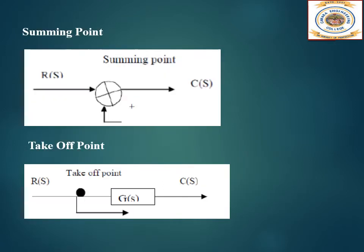Here we have the summing point, also called the summation point. The summation point has two or more inputs. R(s) is one input — it can be given as plus or minus. Accordingly it will add or subtract depending on the polarities. Next is the takeoff point — it is from where the signal is taken and fed to somewhere else. So the three components are: block, summation point, and takeoff point.